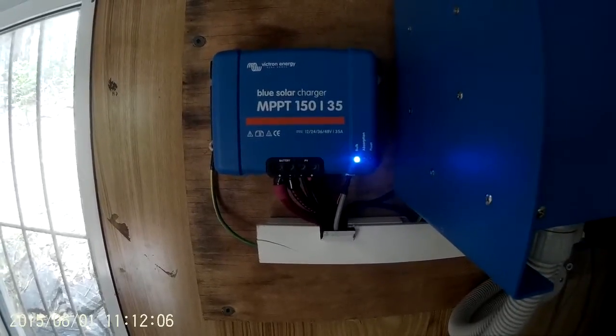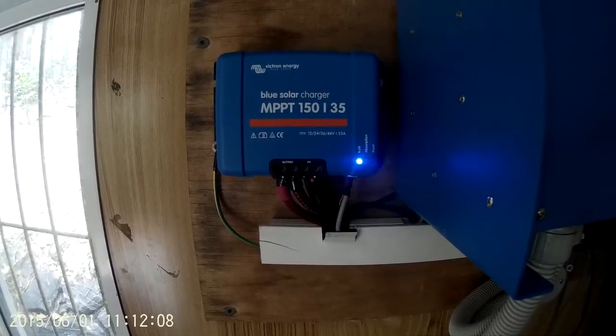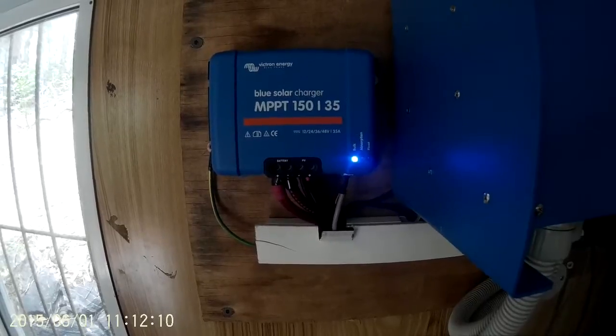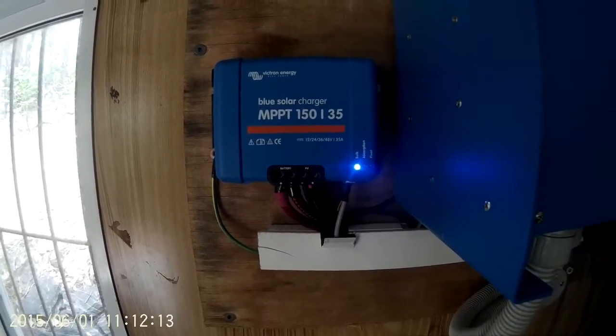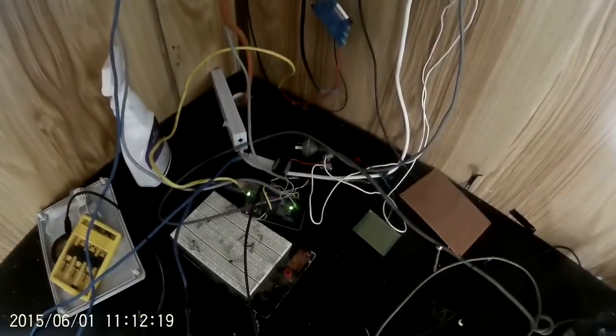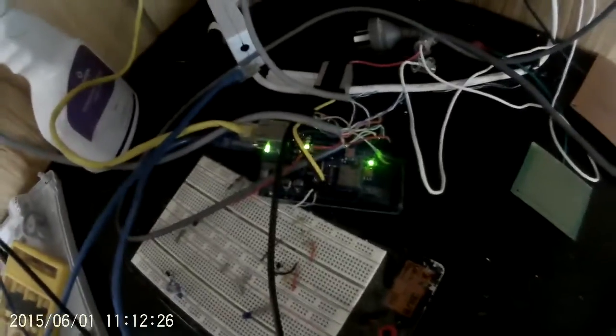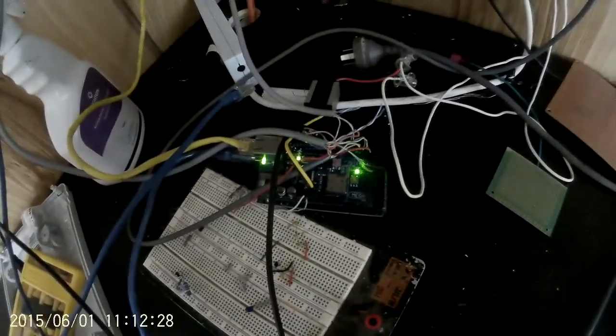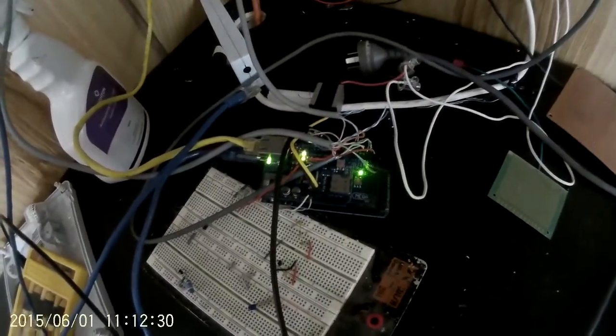Basically the good thing about the Victron energy gear is that you can interface it. It uses TTL logic and you can basically interrogate it for data. So down here we've got an Arduino. It's a bit of a mess. I value function over form.